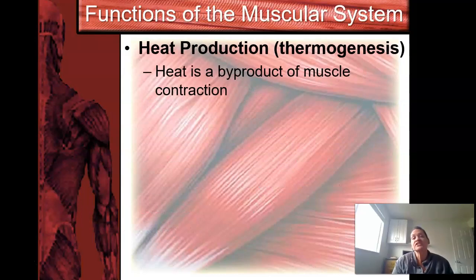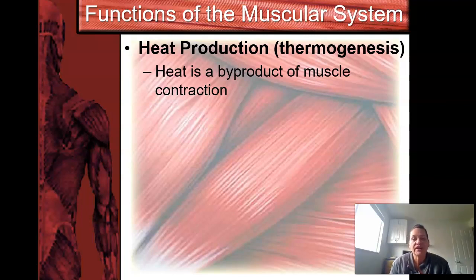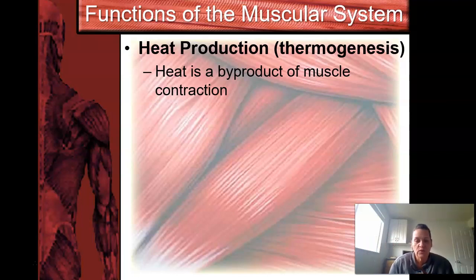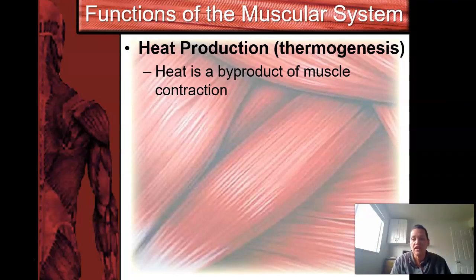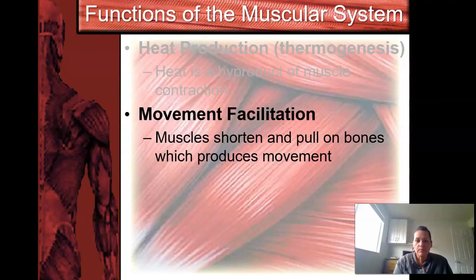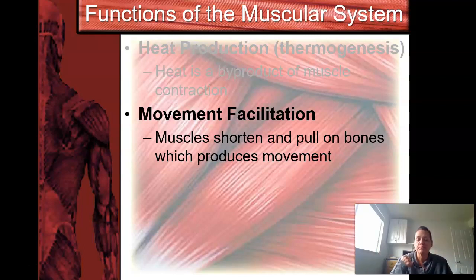Let's go into the functions of the muscular system. One of the first functions is heat production, or thermogenesis — heat is a by-product of muscle contraction. Every time you move a muscle, heat is being generated. When you start to get cold, your body will shiver, and that is your muscles creating heat to keep your body at an acceptable temperature — homeostasis. The second function is movement facilitation. Your muscles will shorten and pull on bones, which produces movement. Muscles never push; muscles always shorten and pull.